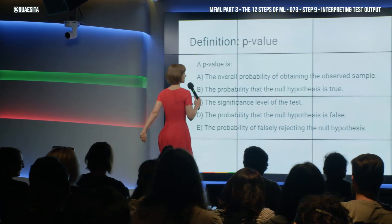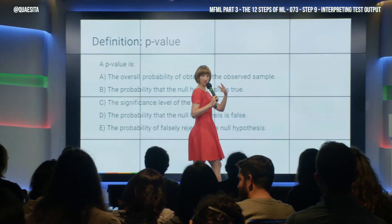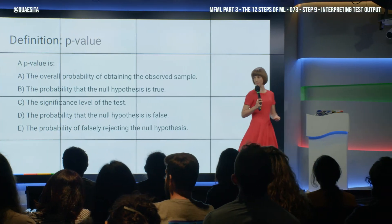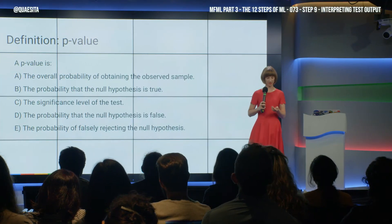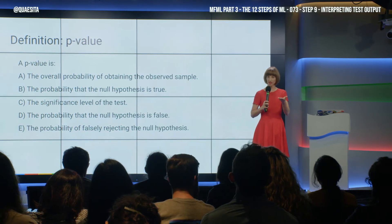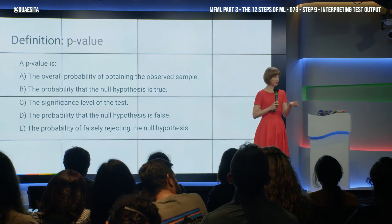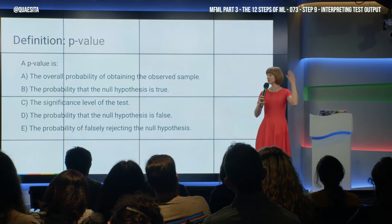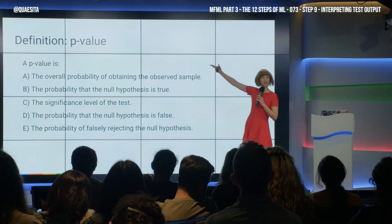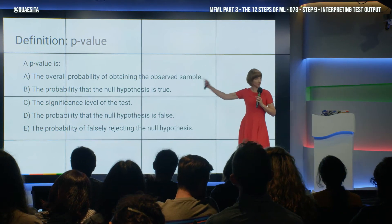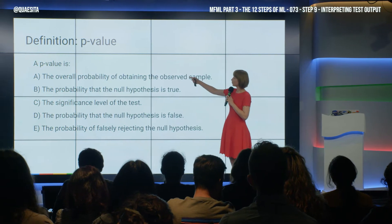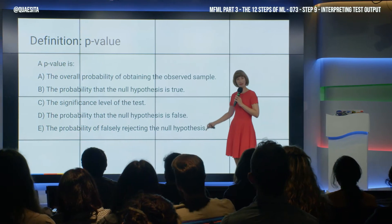Everyone mentally pick heads or tails — flip your mental coin to heads or tails. Got it? Now, what I'm going to do is flip this coin. And if the result on this coin matches your secret choice, you will be shouting out loud on the count of three — shouting which of these is the correct definition for the p-value.